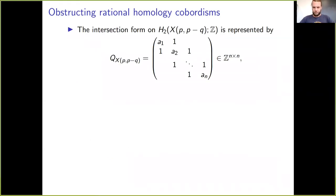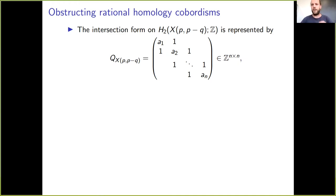The intersection form on X(p, p-q) is represented by the linking matrix of the Kirby diagram: an integral matrix with the a_i's on the diagonal and ones on the two off-diagonals, capturing the fact that all the unknots were successively linked once. This matrix represents the pairing on H_2 of X(p, p-q) as an integral lattice.